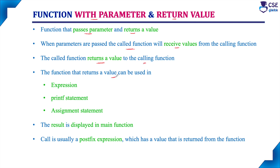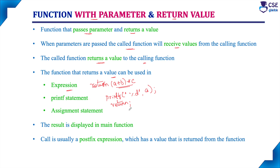A function that returns a value can be used in an expression — for example, return of a plus b into c, or any expression. This will return the value to the calling function, or it can be used along with a printf statement — for example, printf to print a value and then return. Externally it may not appear to return a value, but internally it prints the value on the output screen. Another way is using an assignment statement: sum equals a plus b, then return sum.